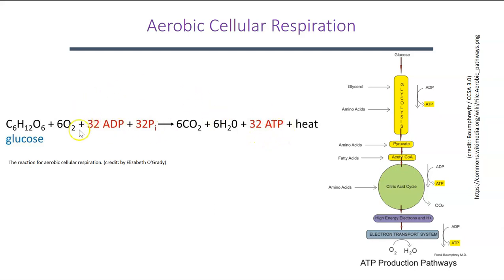In any energy conversion, it's never 100% efficient — you lose small amounts of energy in the form of heat or thermal energy, which we've included in our equation. The 32 ATP highlighted here is an approximation based on eukaryotic animal cells. This number will vary depending on the organism and whether the cell is prokaryotic or eukaryotic.